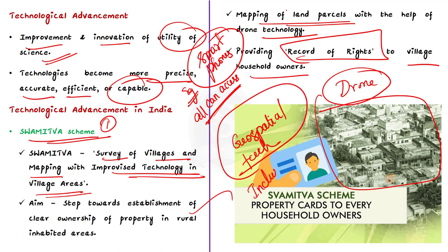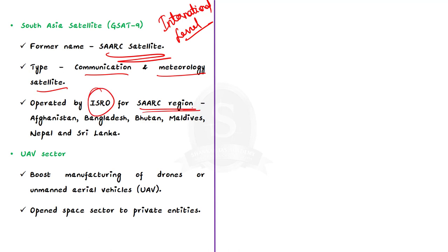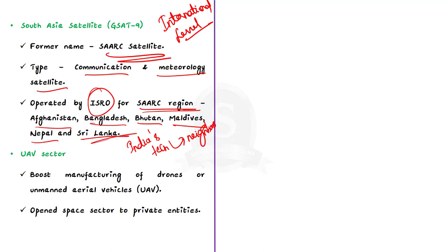Interestingly, India is not only focusing domestically on inclusive growth, but also involves its neighbors in the process. Take for example the South Asia satellite GSAT-9, formerly known as the SAARC satellite. It is a communication and meteorology satellite operated by ISRO for the South Asian Association for Regional Cooperation. This satellite serves the needs of SAARC member nations such as Afghanistan, Bangladesh, Bhutan, Maldives, Nepal, and Sri Lanka — India's technological advancement in the space sector facilitating connection and communication in its neighborhood. This is also an example of inclusiveness. India has also boosted manufacturing of drones or unmanned aerial vehicles and opened up the space sector to private entities, and the participation of the private sector in this is an example of inclusive growth.